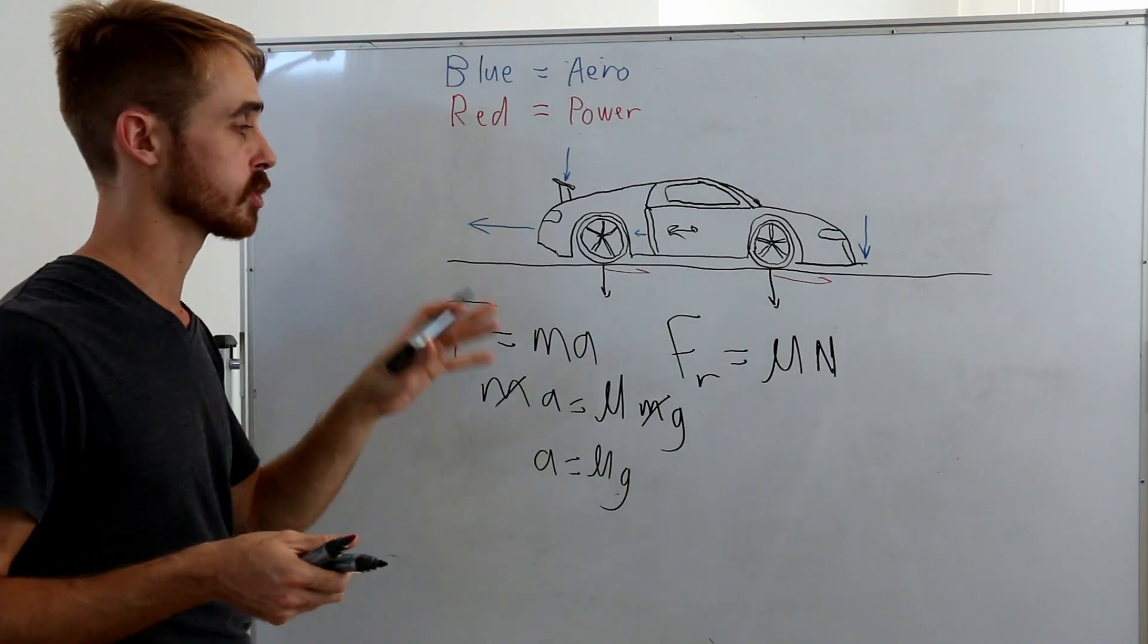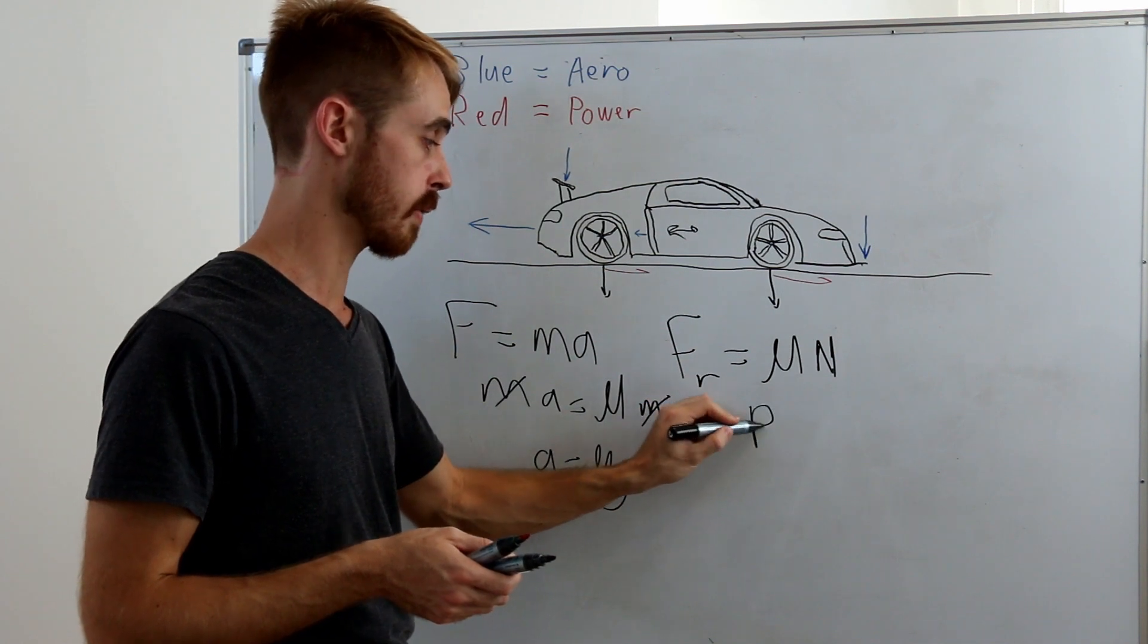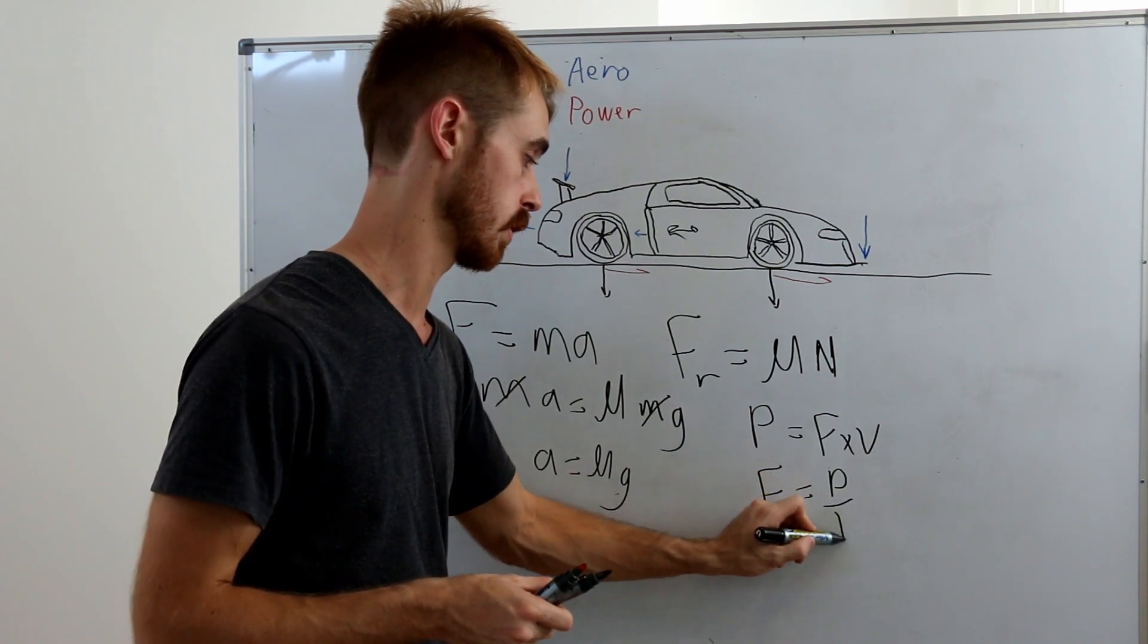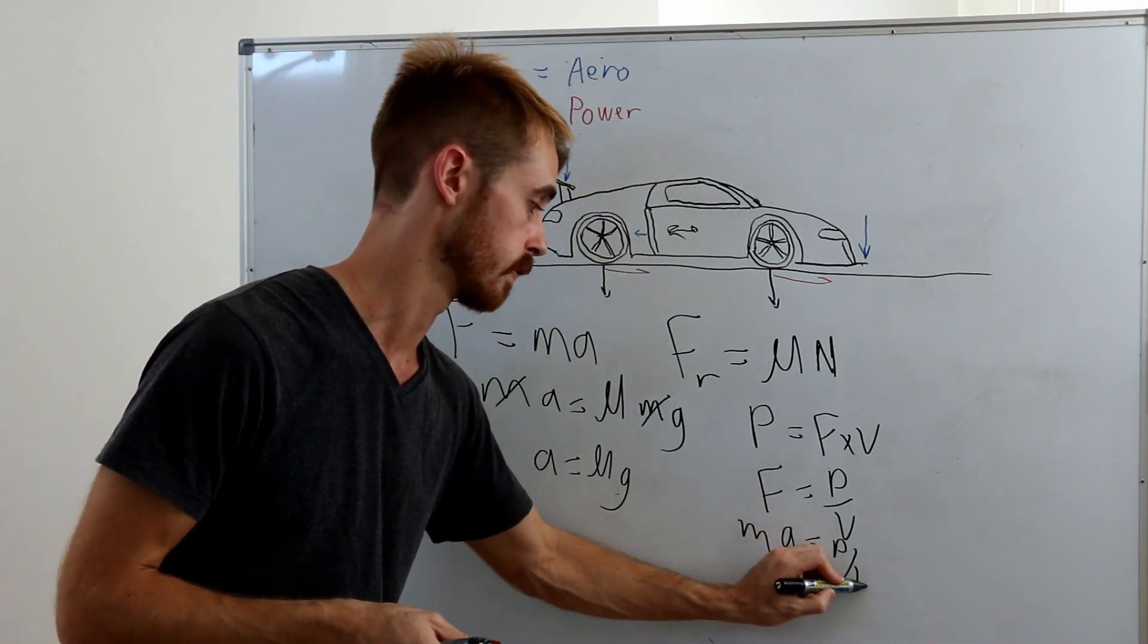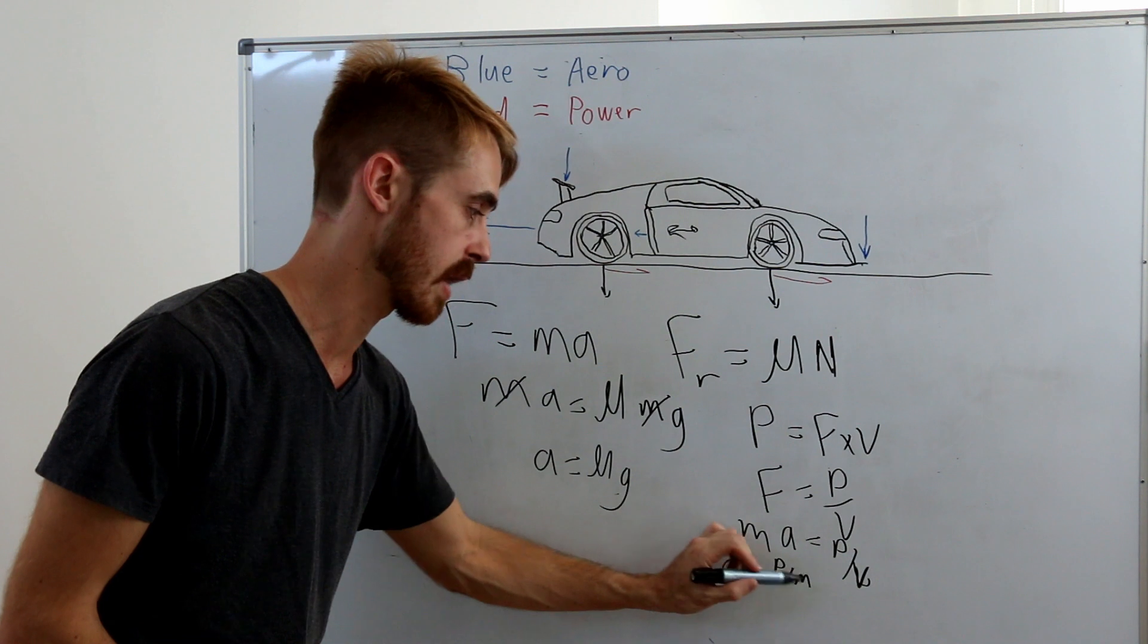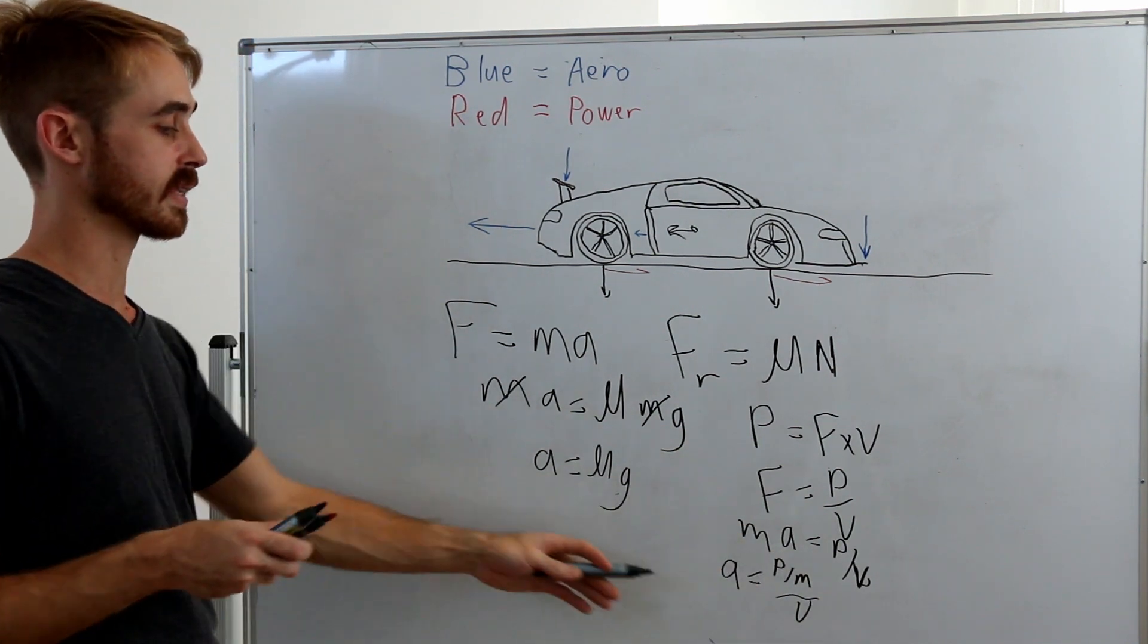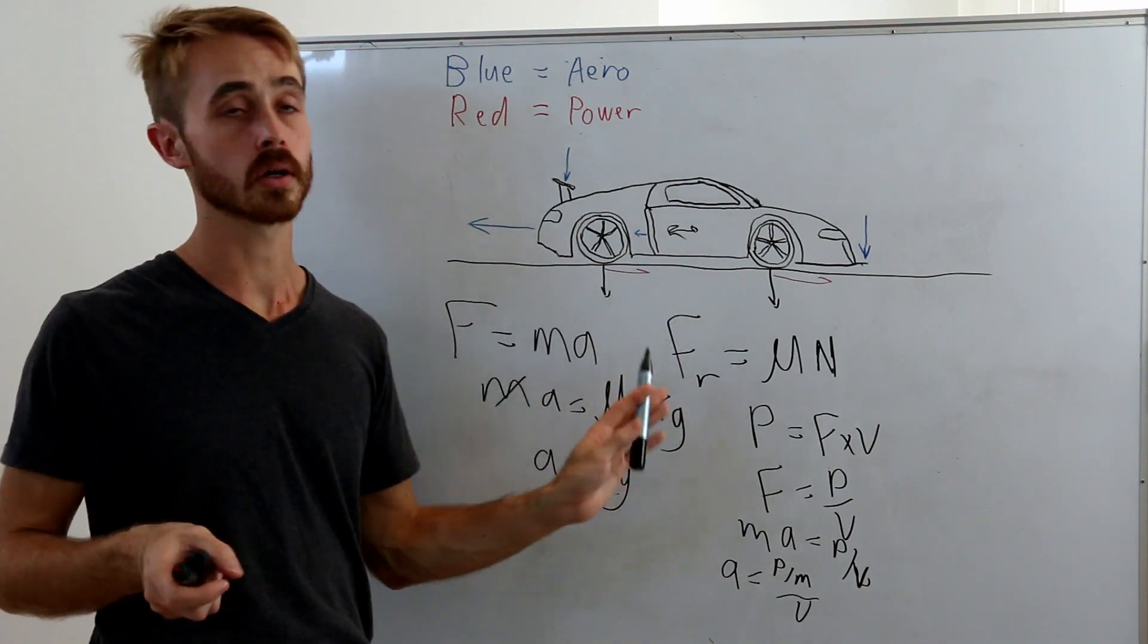Once we're no longer grip limited, our acceleration becomes a function of our power. We'll end up with Power = Force × Velocity, Force = Power/Velocity, ma = Power/Velocity, and then a = (Power/mass)/Velocity. We can see here that as long as the power-to-weight is held constant, we'll end up with the same acceleration between cars again if there's no downforce applied, once we're at low speed but we're no longer traction limited.